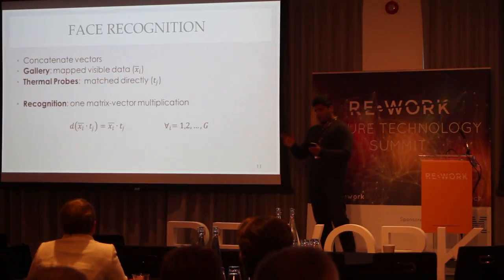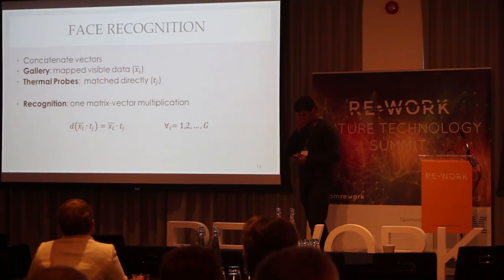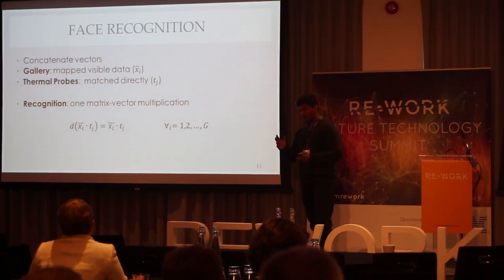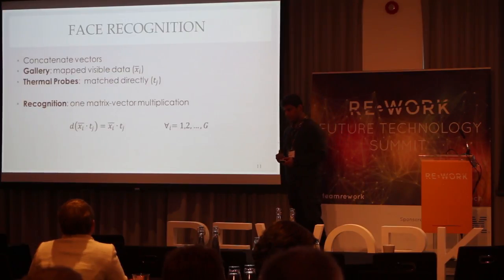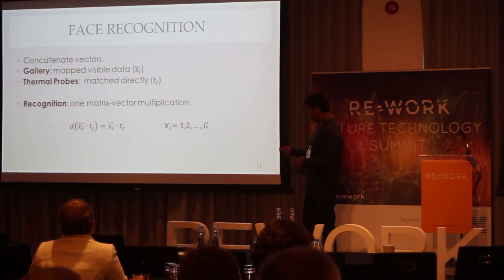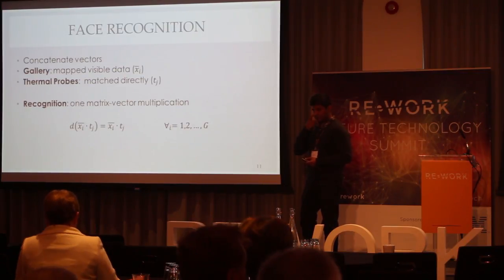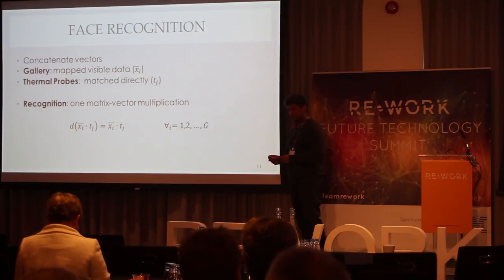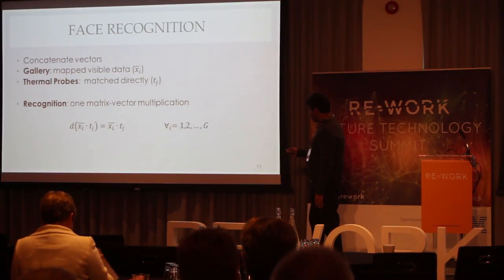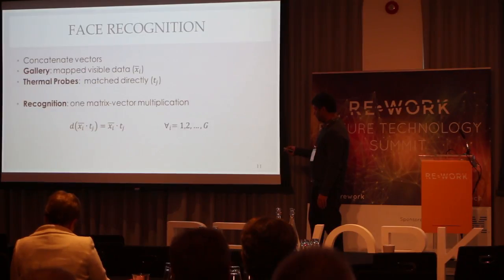Since we have learned our mapping function — and as I said, it's not really about investigating fancy face recognition techniques, we just want to see how effective the mapping is — we simply compute a standard distance between the two facial images. Although with the same vectors, since they are mapped, we can do other things like LDA analysis, partial least squares, or Bayesian matching. But here we simply compute a distance with just one matrix-vector multiplication.